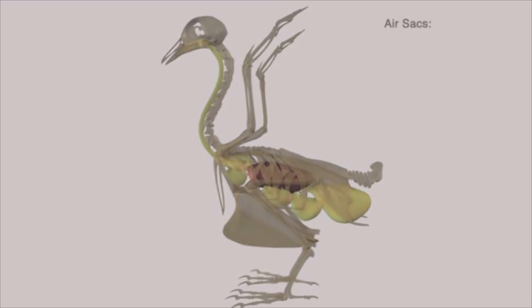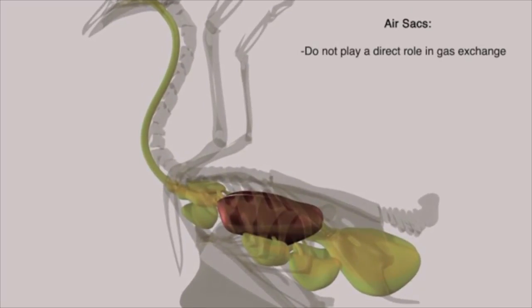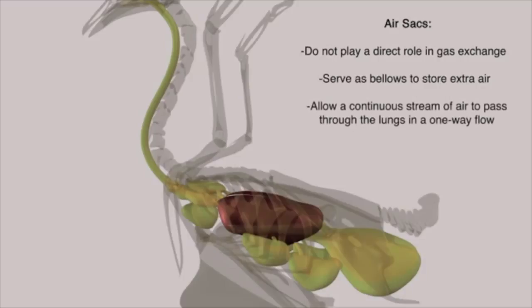These nine air sacs have extremely thin walls and do not play a direct role in gas exchange. Instead, they serve as bellows to store air until expiration. They allow a continuous stream of air to pass through the lungs in a one-way flow, thus producing the most efficient respiratory system of any vertebrate. They are also connected to certain pneumatic bones, aiding the bird in shedding excess heat from its body as it breathes, which would be fatal if not removed.